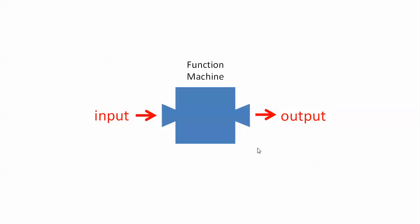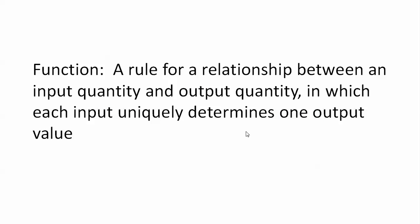Welcome to a lesson on functions and function notation. A function you can almost think of as a type of machine that takes an input and spits out an output. But it's more than just that, because just having inputs and outputs would define just a relationship. A function is a very specific type of relationship — one where each input uniquely determines one output value. That means for each input, there is exactly one output. So you put in the same input, you're going to get the same output every single time. It's a predictable machine.